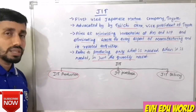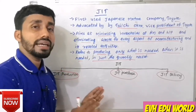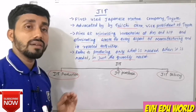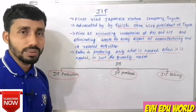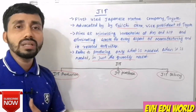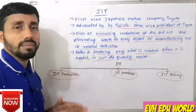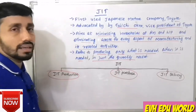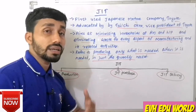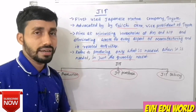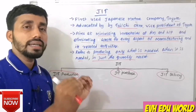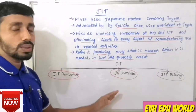JIT Purchasing is an arrangement with suppliers. The company will purchase raw materials only when there is a need for production. This involves maintaining a close relationship with a few reliable suppliers, purchasing materials just in time for production use.